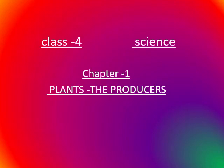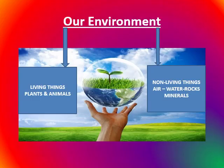Class 4 Science, Chapter 1: Plants - The Producers. Our environment includes living things and non-living things. Living things include plants and animals. Non-living things include air, water, rocks and minerals. In this chapter we are going to learn about plants.